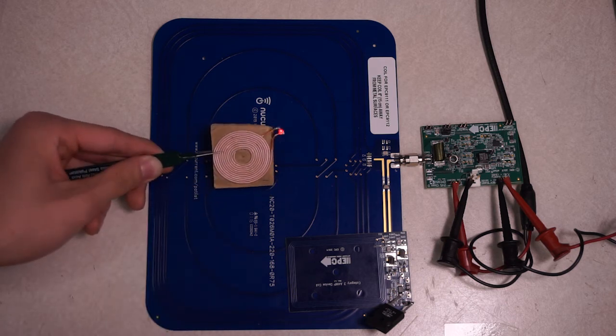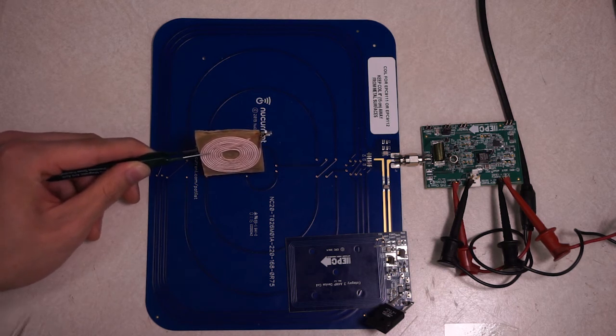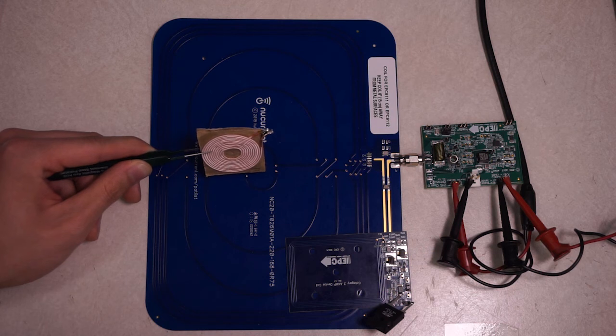However, if the receiver coil is in this direction, it will receive very few energy, so the LED will not be lighted on.